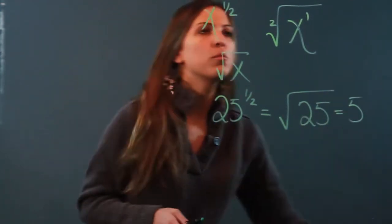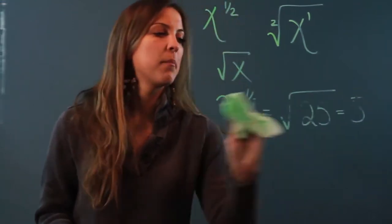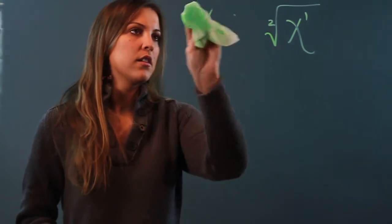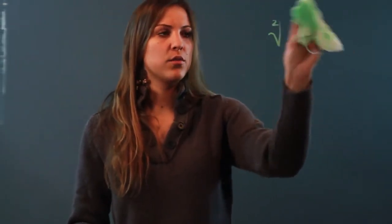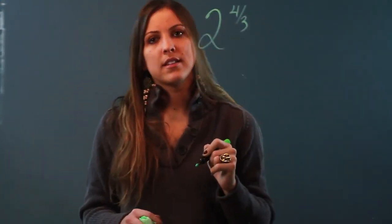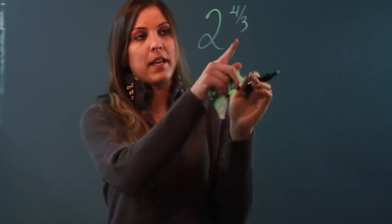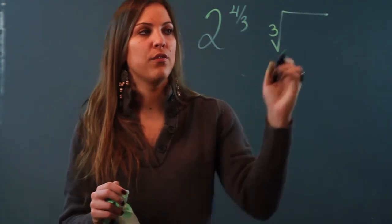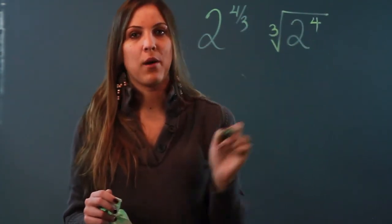Now let's change the numerator. Let's say I had the number 2 raised to the 4 thirds. Now instead of doing the square root, because my denominator is 3, it means that I'm taking the cube root of 2 to the 4th power.